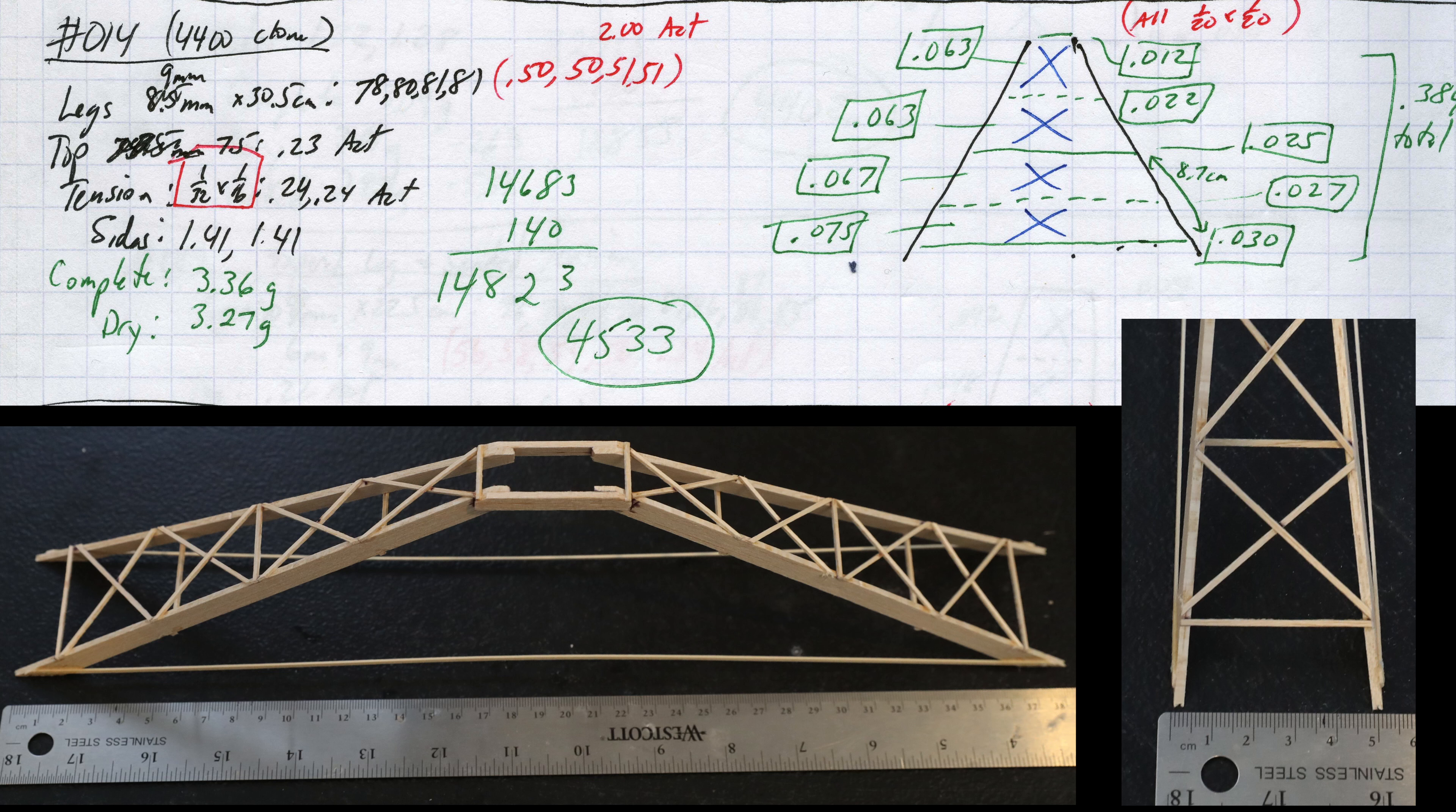I continued to try other optimizations to see if I could beat the 4900 score but I wasn't able to get there given the time I wanted to spend on this project. You can see that this bridge used 1/32 by 1/16 tension members so there was a chance that this particular build could have been lighter with a different tension choice as well.